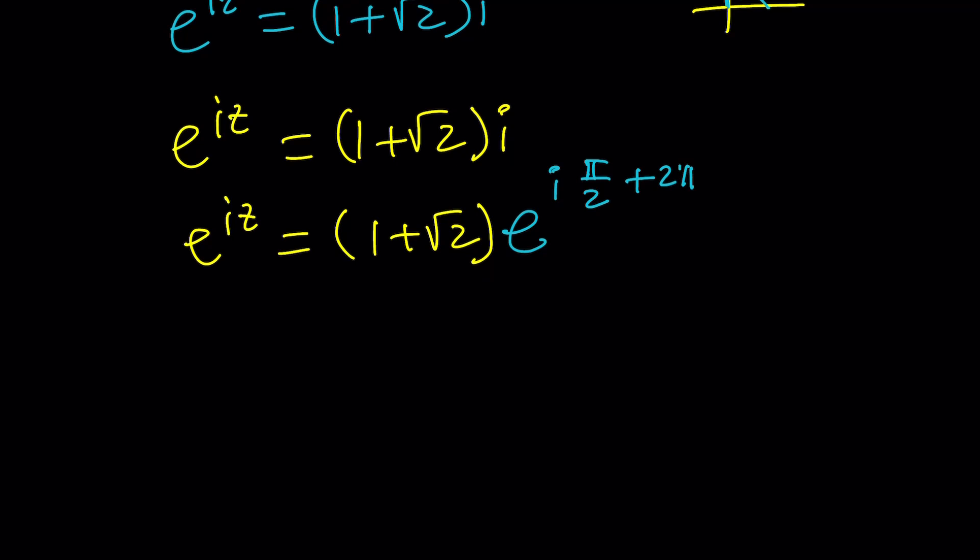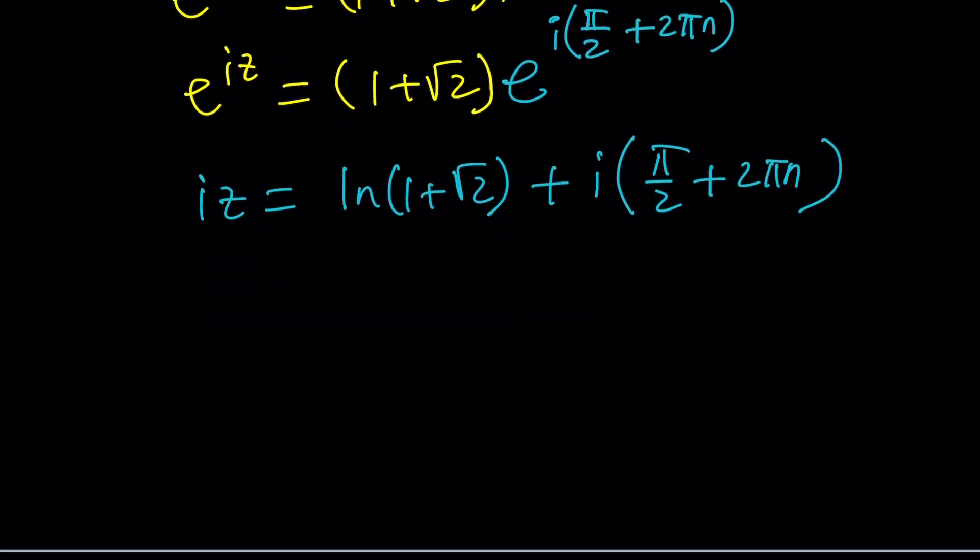Now, we can go ahead and natural log iz equals ln 1 plus root 2. Remember, this is a real value, ln, plus i times pi over 2 plus 2 pi n. And then we're going to divide by i. No, we're going to multiply by negative i. That's what I usually do. So, when we do, this is going to become 1. So, we're going to get z equals pi over 2 plus 2 pi n minus i times ln 1 plus root 2.